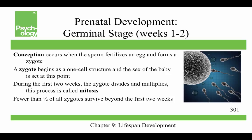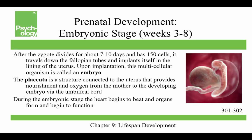Let's talk about prenatal development, starting with conception. When a sperm fertilizes an egg, it forms a zygote — a one-cell structure where the sex of the baby is set. During the first two weeks the zygote divides and multiplies through mitosis, though fewer than half of all zygotes survive beyond two weeks. After 7 to 10 days and about 150 cells, it travels down the fallopian tubes and implants on the lining of the uterus, at which point it's called an embryo.